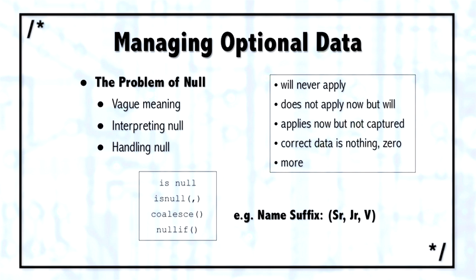Some people incorrectly use null when they really mean zero. Another problem with null, besides the fact that the meaning is vague, is that it takes special work to code around null — for example, the IS NULL check when testing in a WHERE clause, the ISNULL function when retrieving a null and you want to replace it with something else, COALESCE as another way of handling nulls, and NULLIF, which takes a specific value and replaces it with a null.